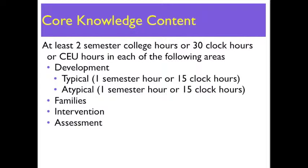An official transcript or transcripts will need to be sent with your application. College coursework must show a minimum of 15 clock hours spent on the birth-to-three with special needs population to receive credit.